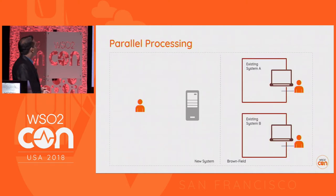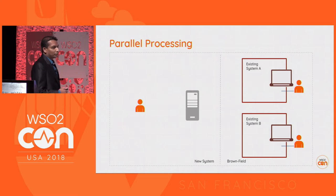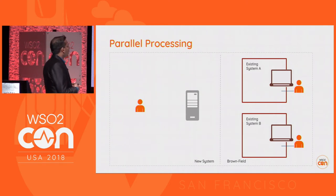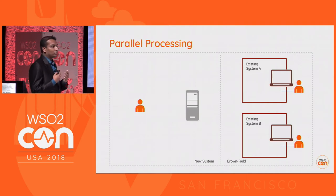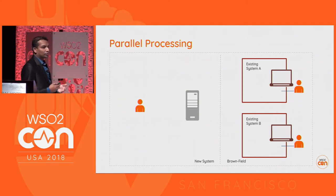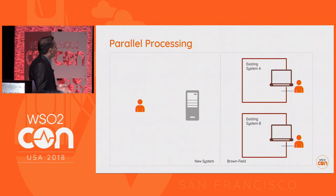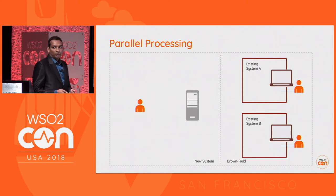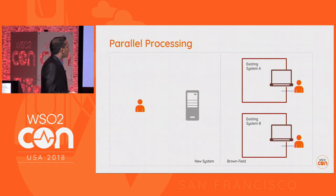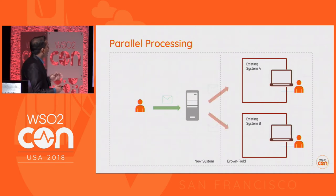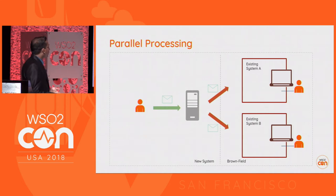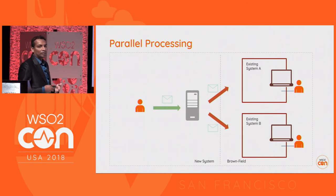Finally we have parallel processing. For some reasons we might need to spawn messages in the integration solution and call existing systems in parallel, mainly to reduce latency. We get a message at the integration solution, clone it, and invoke the existing systems at the same time. This is parallel processing.